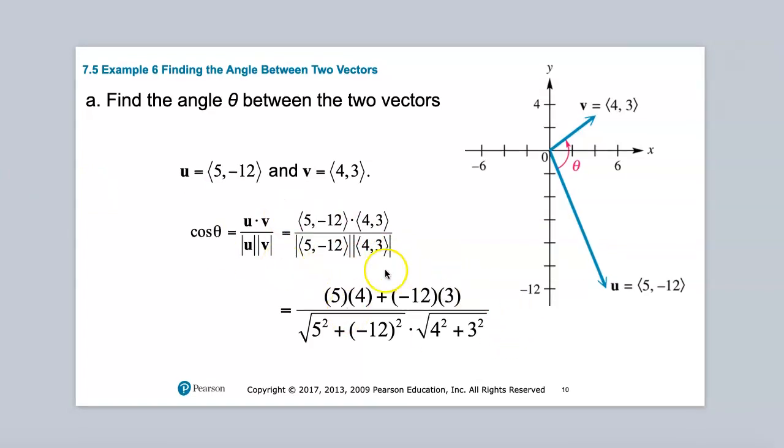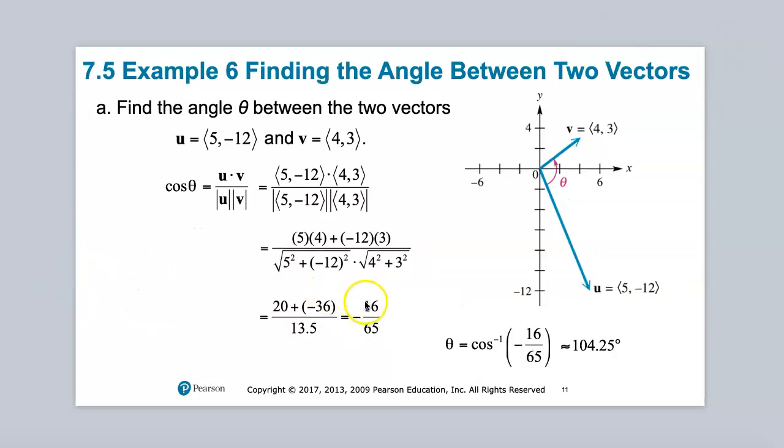This is kind of a long and slow way of getting this same answer. But here we got, like I said, 20 plus negative 36. The product of these, okay, so this was a bit of a typo.